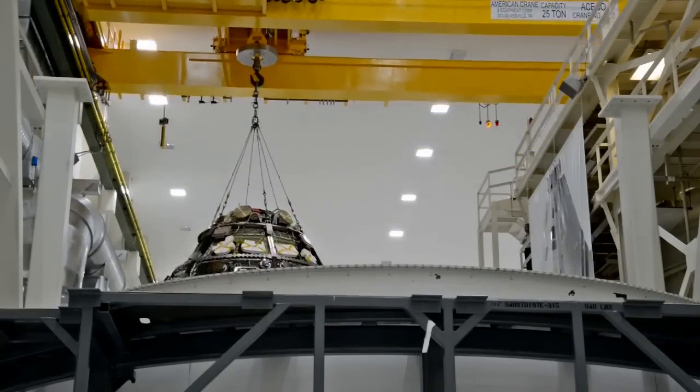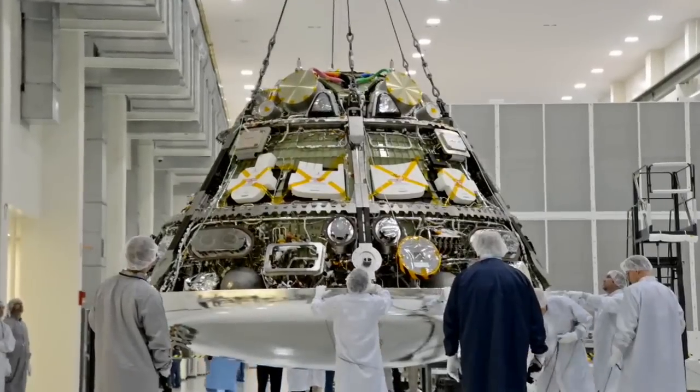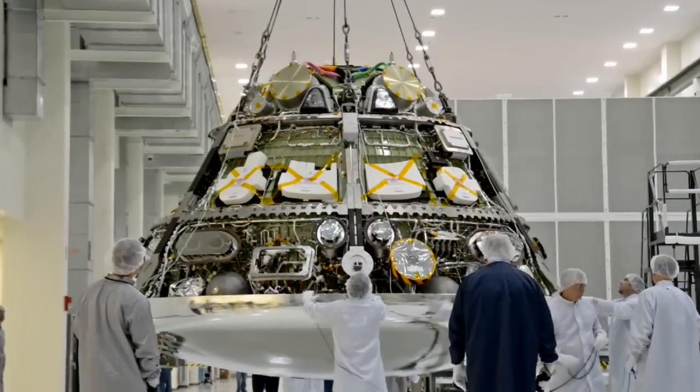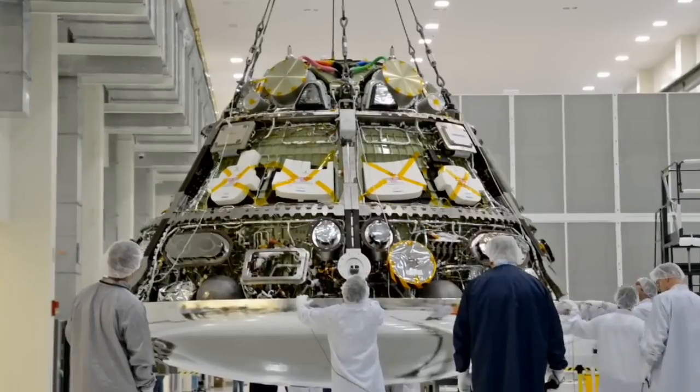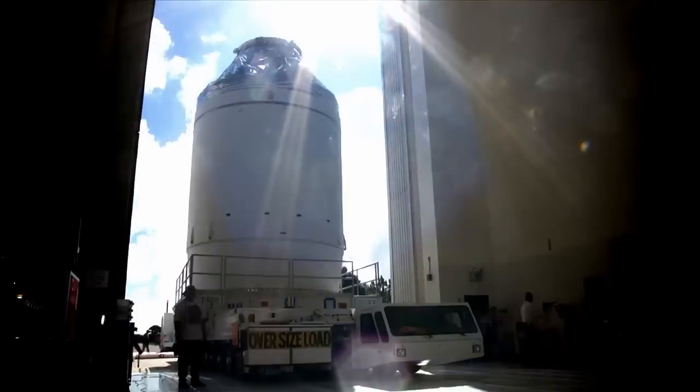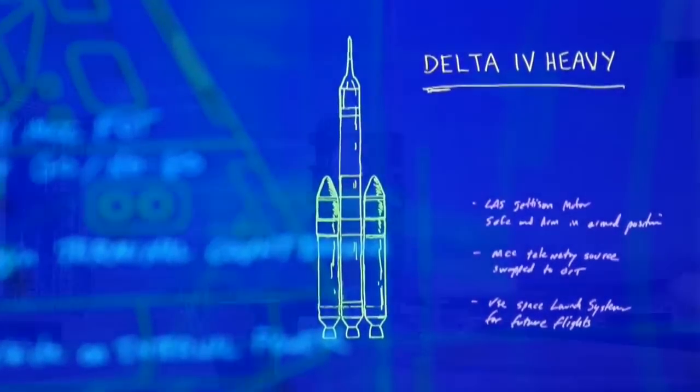For Orion's first flight, no astronauts will be aboard. The spacecraft is loaded with sensors to record and measure all aspects of the flight in every detail. It all begins with launch aboard a Delta IV Heavy rocket.